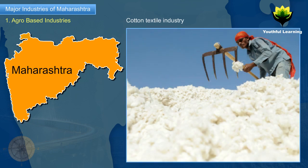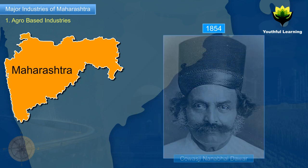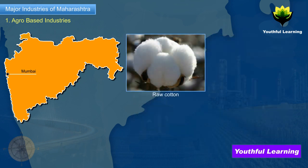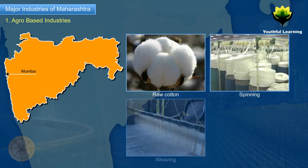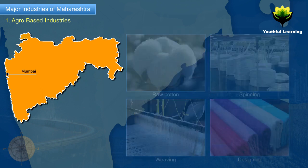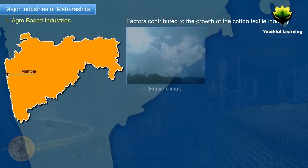Cotton Textile Industry: In 1854, Cowasjee Nanabhai Davar set up the first textile mill in Mumbai. The cotton textile industry involves processing of raw cotton — spinning, weaving, designing, etc. Previously, the cotton textile industry was a cottage industry. Factors which contributed to its growth in Mumbai include the humid climate.